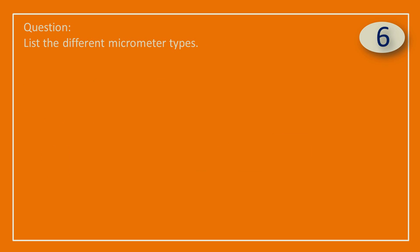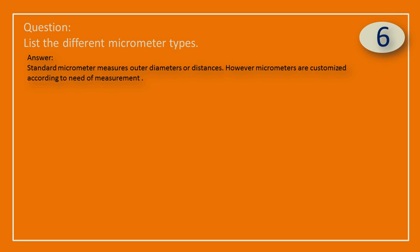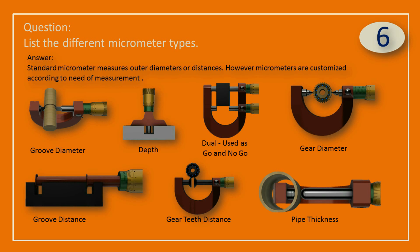Question: List the different micrometer types. Answer: Standard micrometer measures outer diameters or distances. However, micrometers are customized according to the need of measurement. Here are some of the applications.